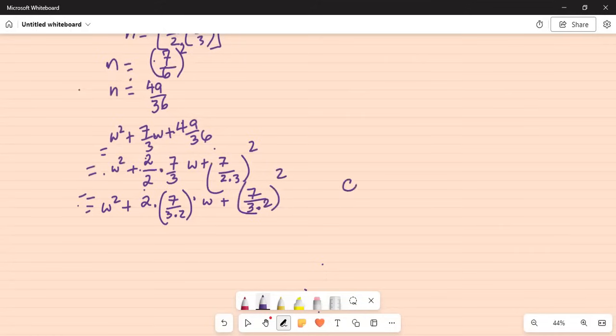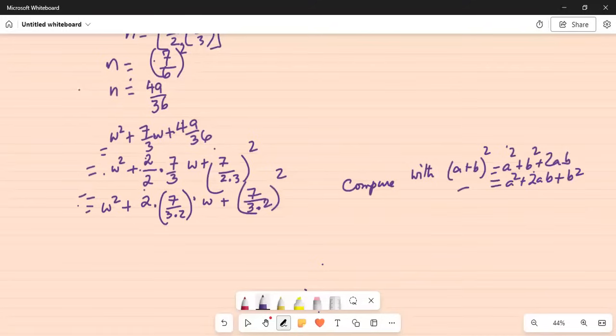So, compare with a plus b whole square, or say perfect square, is equal to a² plus b² plus 2ab. Or, let me write this as a² plus 2ab plus b².